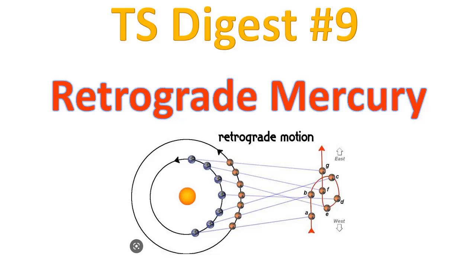Hello everybody, Timing Solutions Digest number 9: Retrograde Mercury. This is a question from Timing Solutions user Steve. He asked about how to analyze the retrograde period and how we can use this information for our trading plan. We will do it with Timing Solutions software.